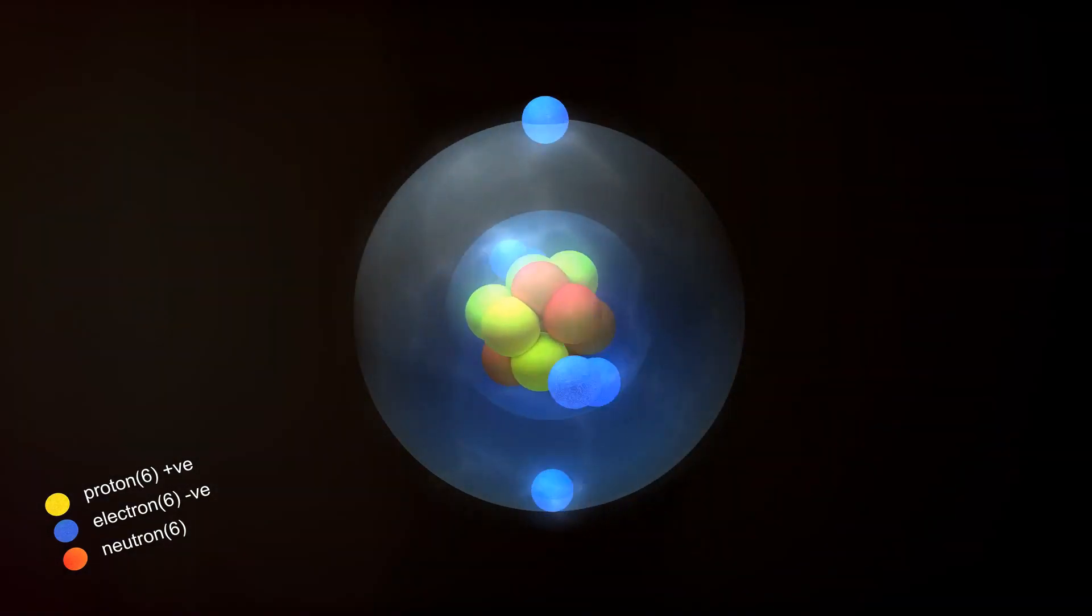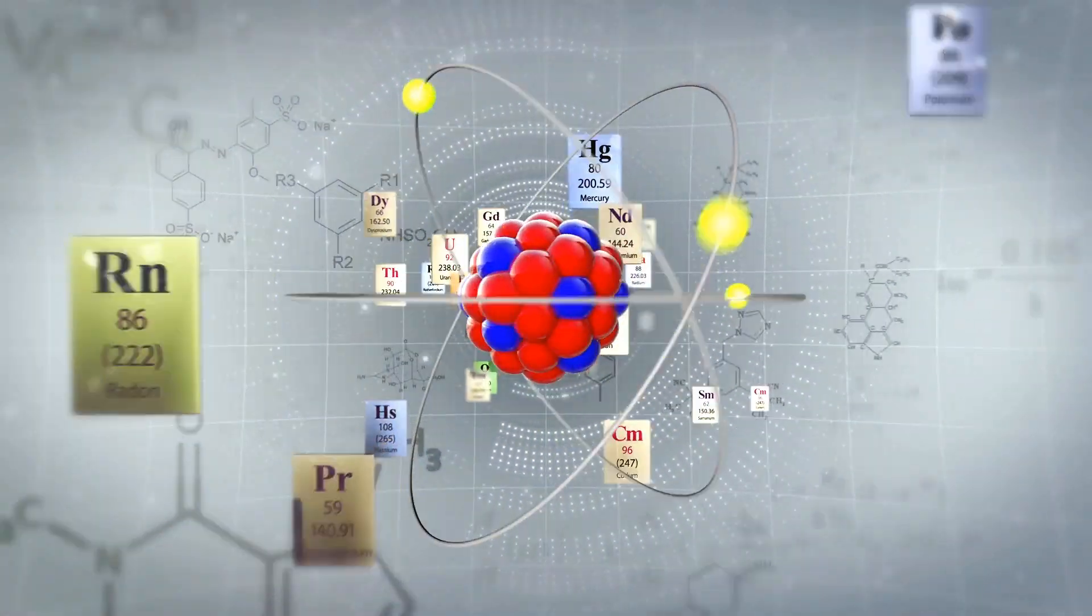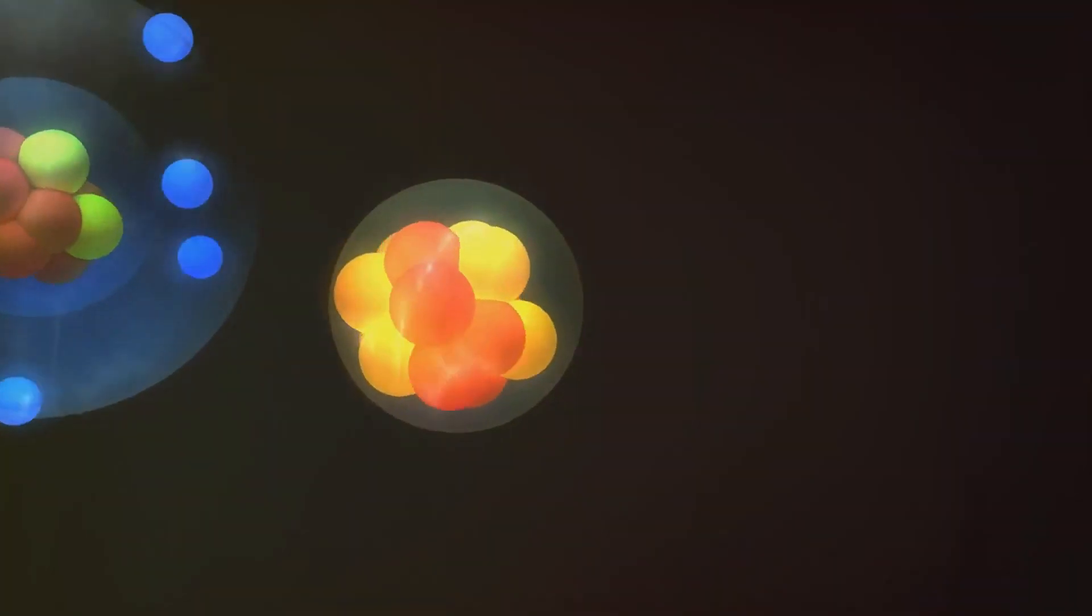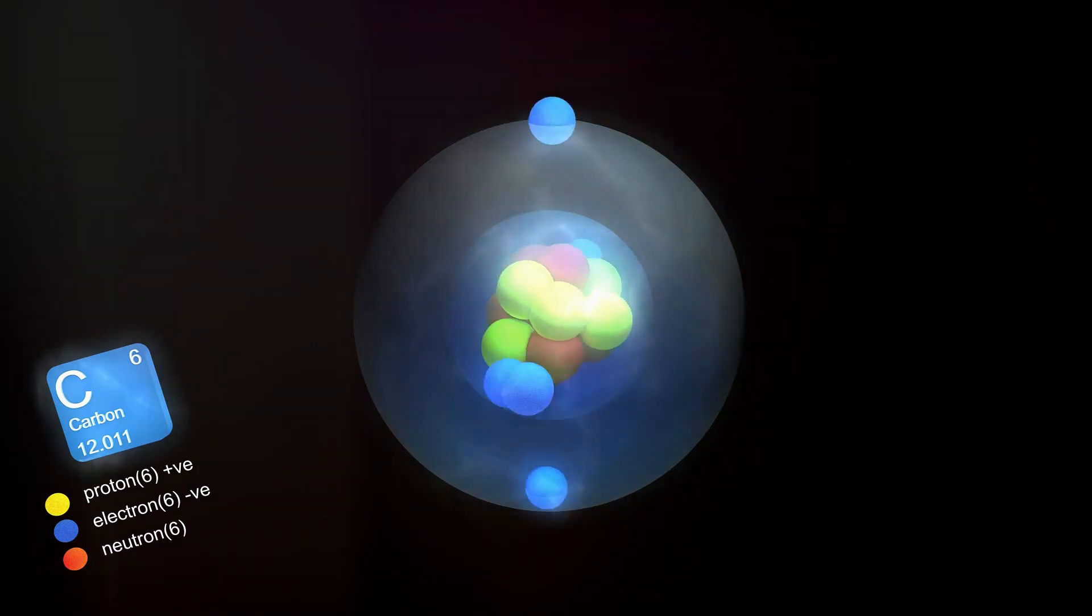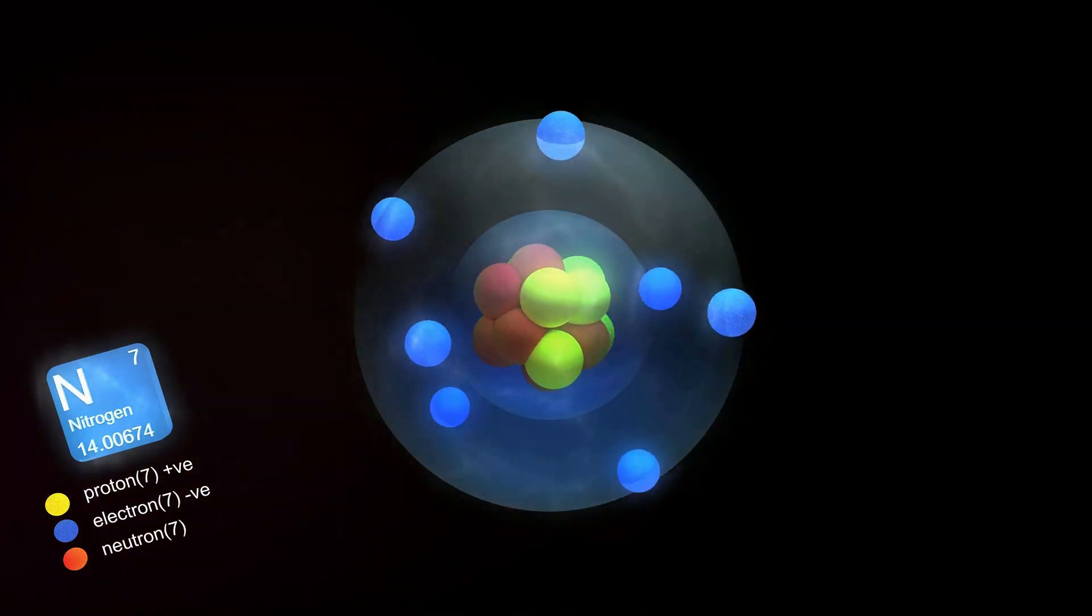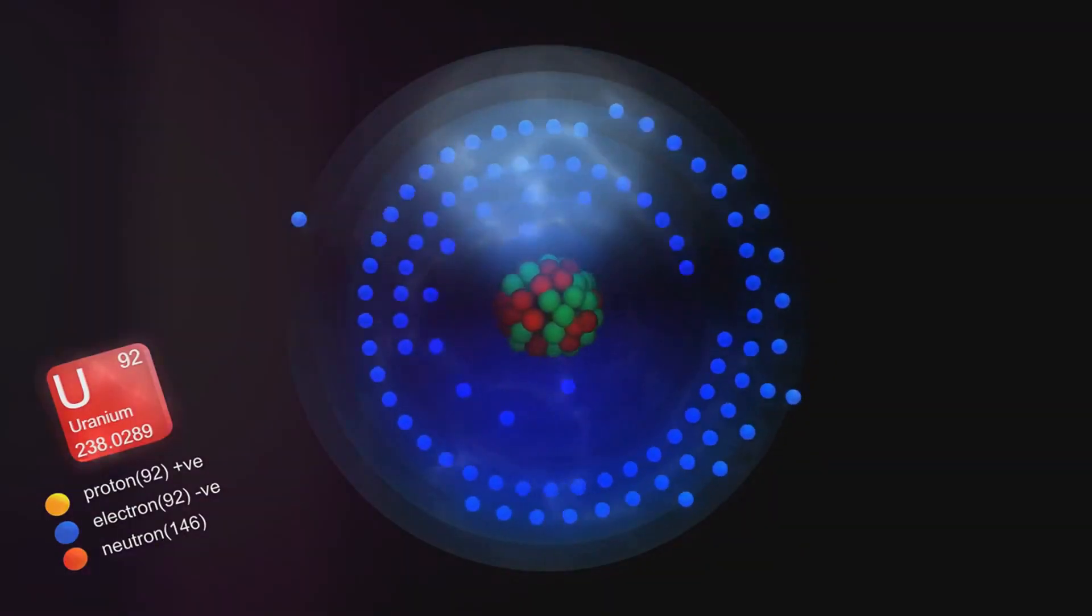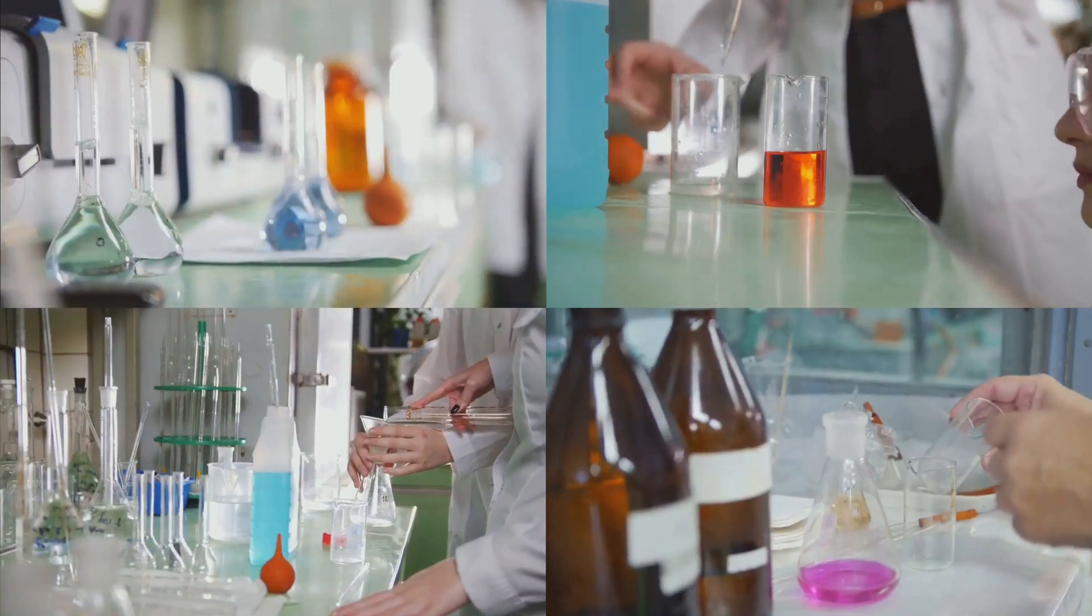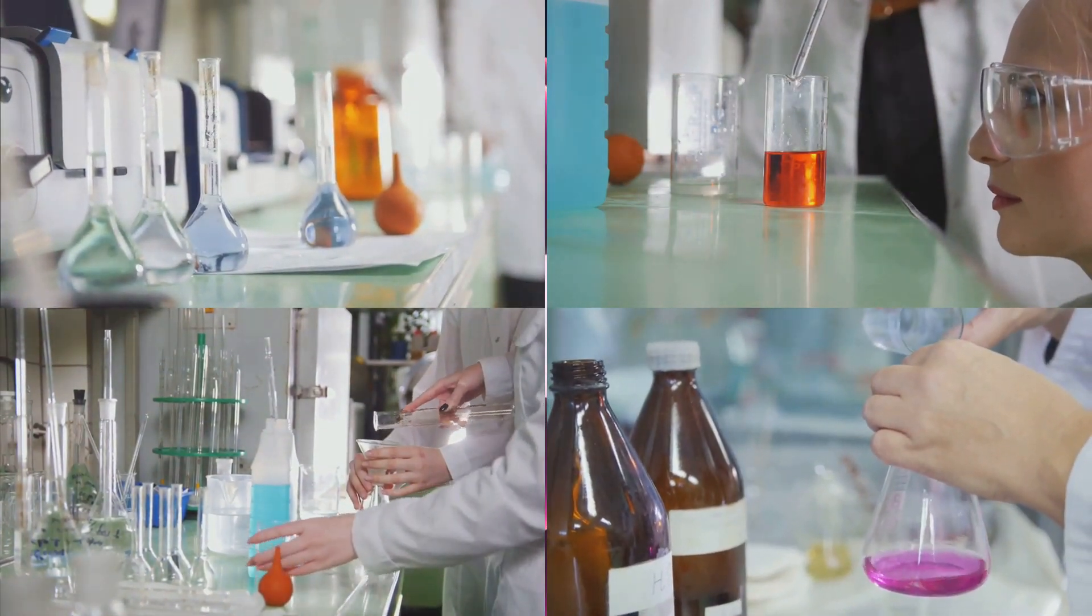So let's sum up what we've learned about elements today. Elements are the building blocks of matter, defined by their atomic number. Atoms, the smallest unit of an element, are composed of protons, neutrons, and electrons. Different isotopes of an element have the same number of protons, but a different number of neutrons, leading to different physical properties. Elements combine to form compounds, with the arrangement of electrons playing a crucial role in these interactions. And by studying these elements and their interactions, we can make predictions and create new substances.